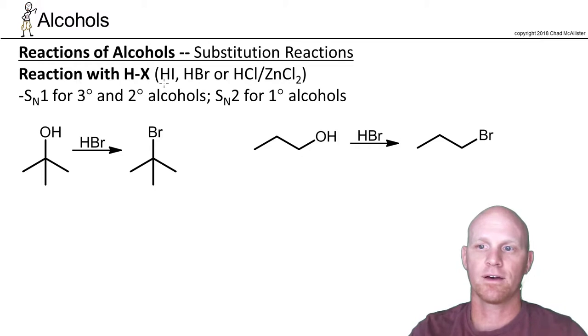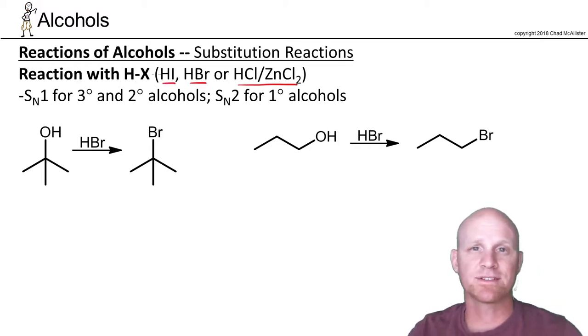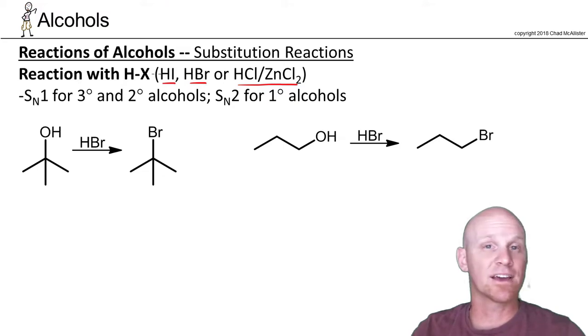First off, we'll look at the difference in HI, HBr, or HCl with ZnCl2. HI replaces the hydroxyl group with an iodine, HBr with a bromine, or HCl and zinc chloride with a chlorine. And it turns out with HCl, we need a little bit of zinc as a Lewis acid catalyst. And we'll see kind of how that plays a role.